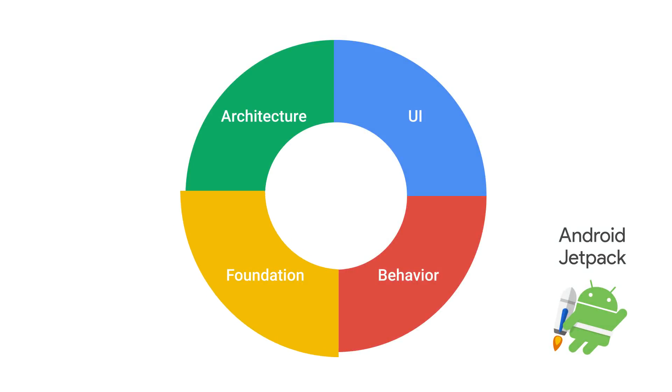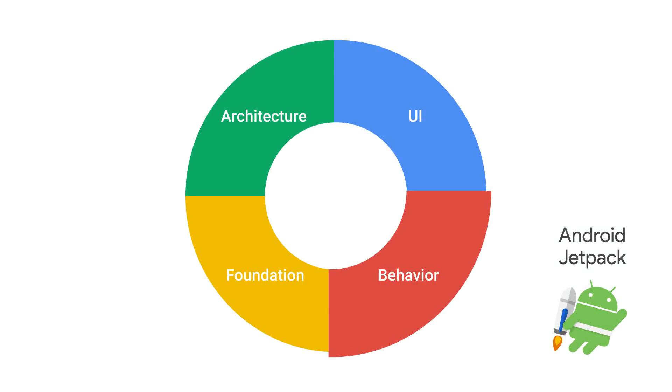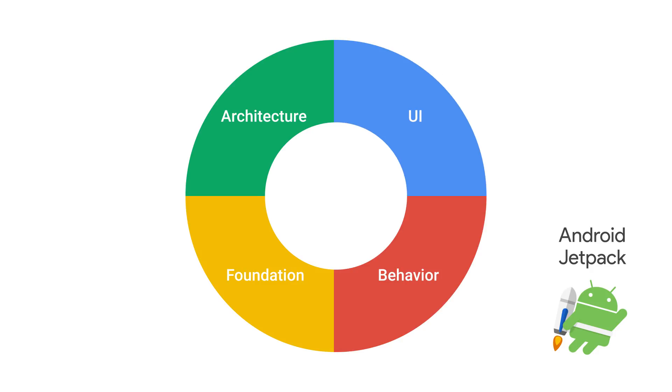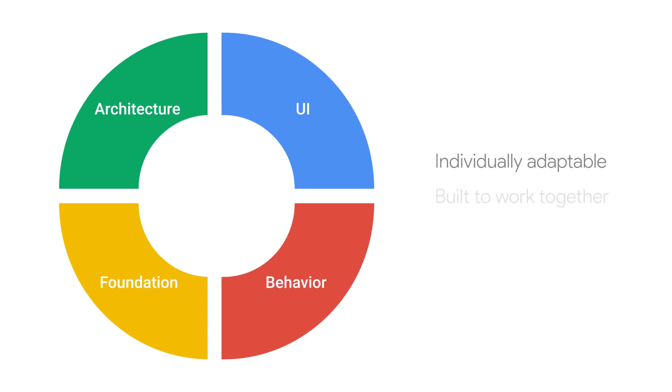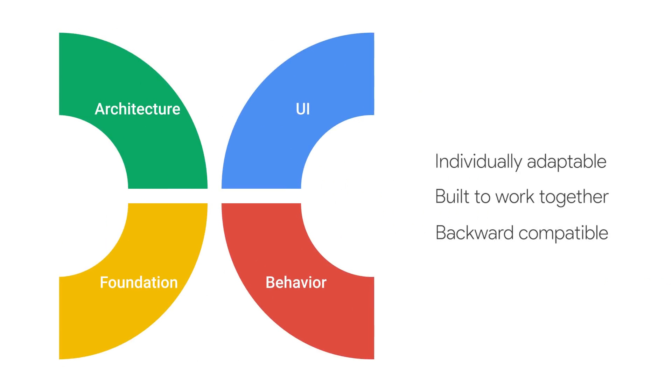Jetpack is made up of components in four categories: Foundation, Architecture, Behavior, and UI. Each component is individually adoptable and built to maintain backwards compatibility.